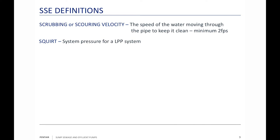Squirt is a measure of pressure used in an LPP (low pipe pressure) system. When you set this LPP system up, you have to test it to make sure you have enough pressure — not too much, not too little. The inspector, before you bury the system, has you run fresh water through and runs a test. Squirt means we're checking that system to make sure it's right.